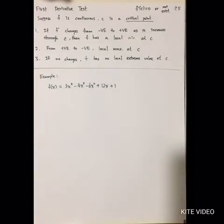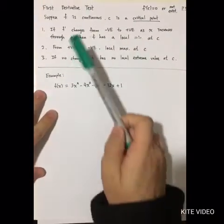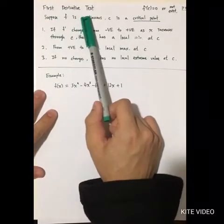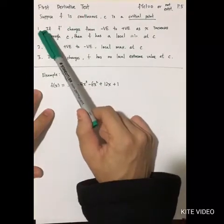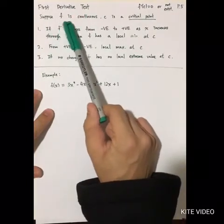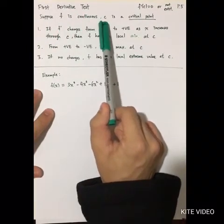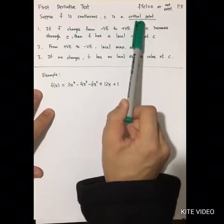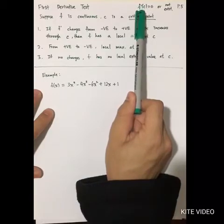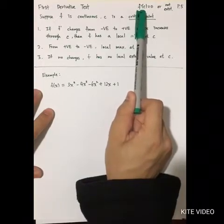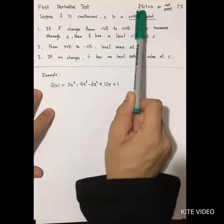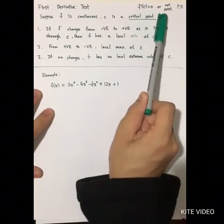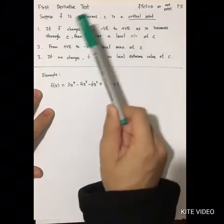What we did in the past is use what we call the first derivative test, or the first order conditions. The logic is that suppose f is continuous and c is the critical point. A critical point means that the first order condition — when you differentiate with respect to the variable once — gives zero or does not exist.